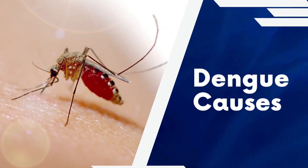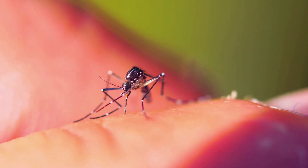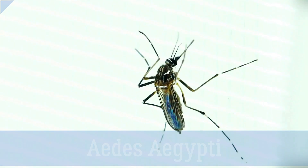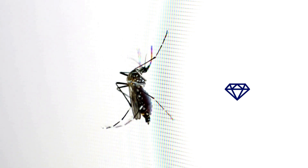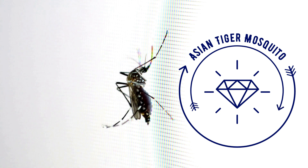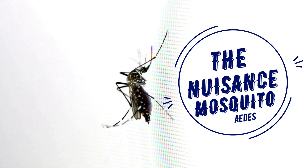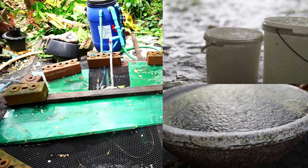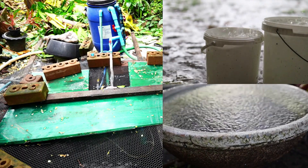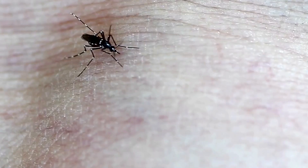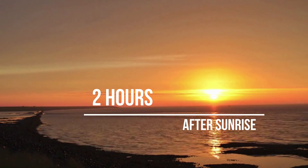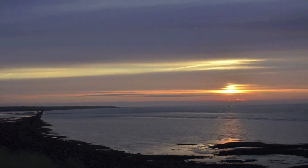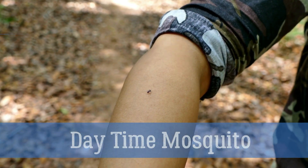Now coming to etiology or causes of Dengue. It is transmitted mostly by female Aedes aegypti or Aedes albopictus. Aedes aegypti is also known as yellow fever mosquito. Aedes albopictus is also commonly known as Asian tiger mosquito or forest day mosquito. Aedes mosquitoes are also called nuisance mosquitoes because they bite mostly in day hours and are mostly collected in stored water tanks, pots and empty utensils. Some studies have shown this species is most active for approximately 2 hours after sunrise and several hours before sunset, so it is also called the daytime mosquito.